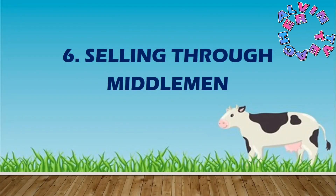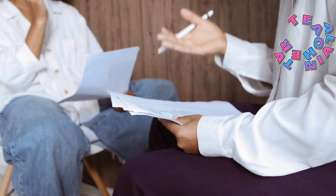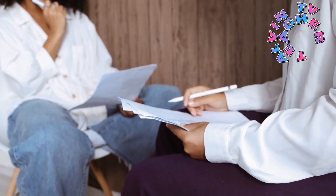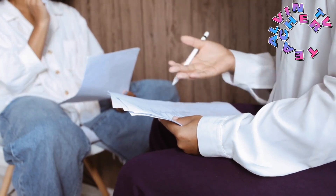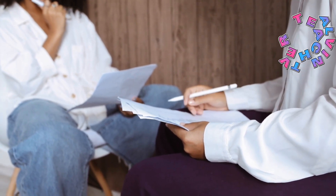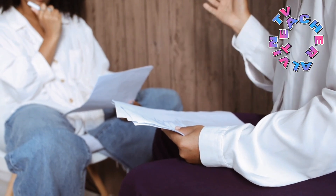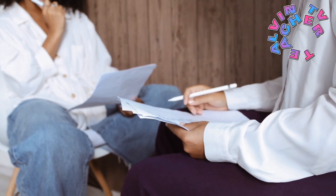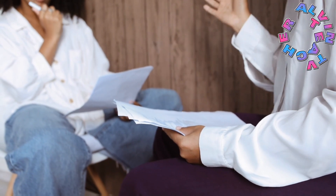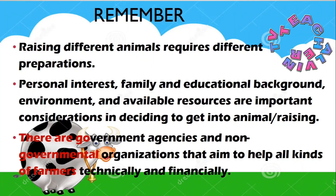Lastly, selling through middlemen. There are people who work with entrepreneurs to make deals with other entrepreneurs — resellers and dealers. These are called middlemen. Middlemen are people who buy goods from animal raisers and sell them to retailers or other consumers.